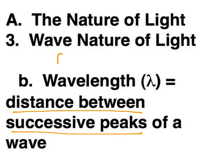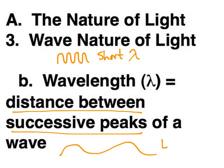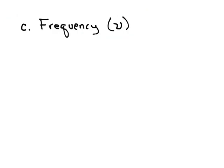So if you have a wave where the peaks are really close together, we would say that's a short wavelength. If you have waves where the peaks are very far apart, that's a long wavelength.